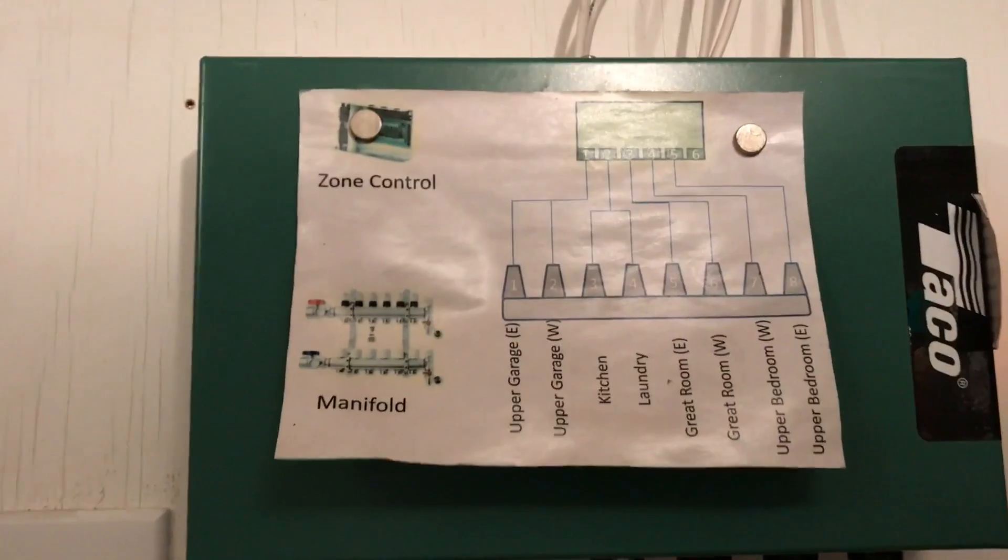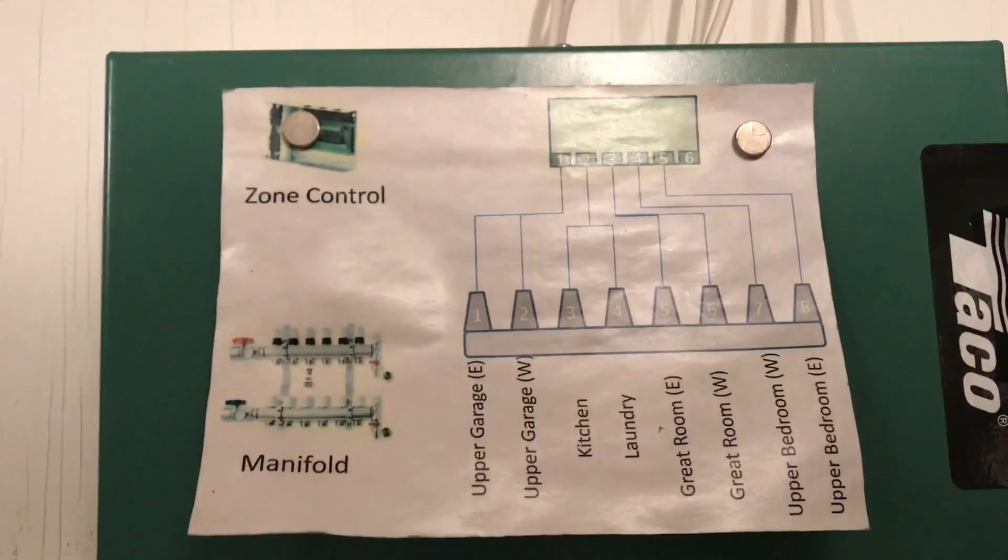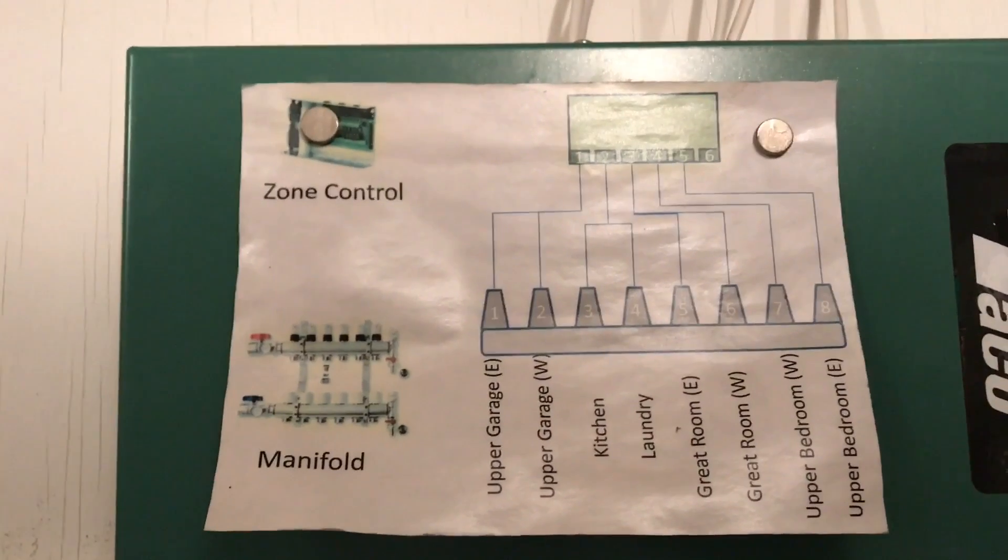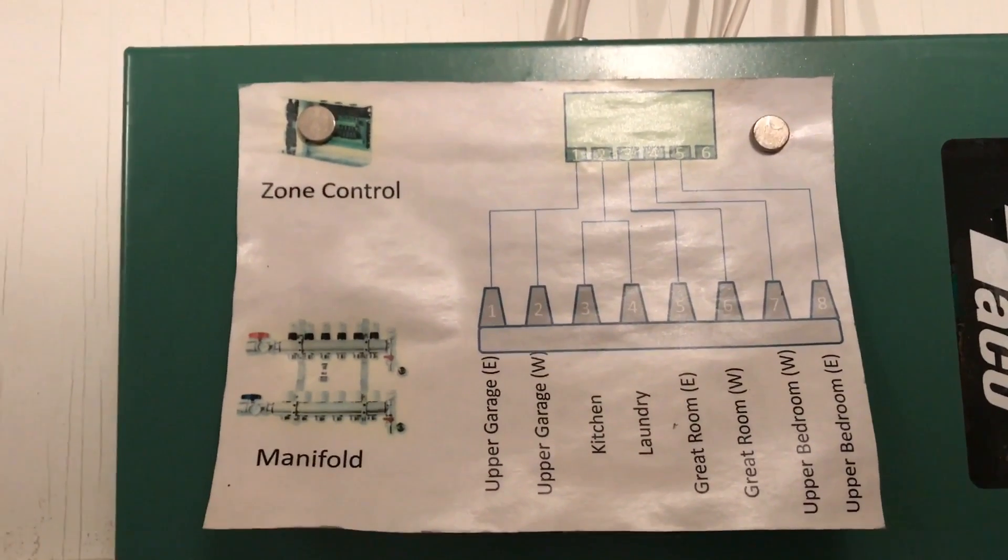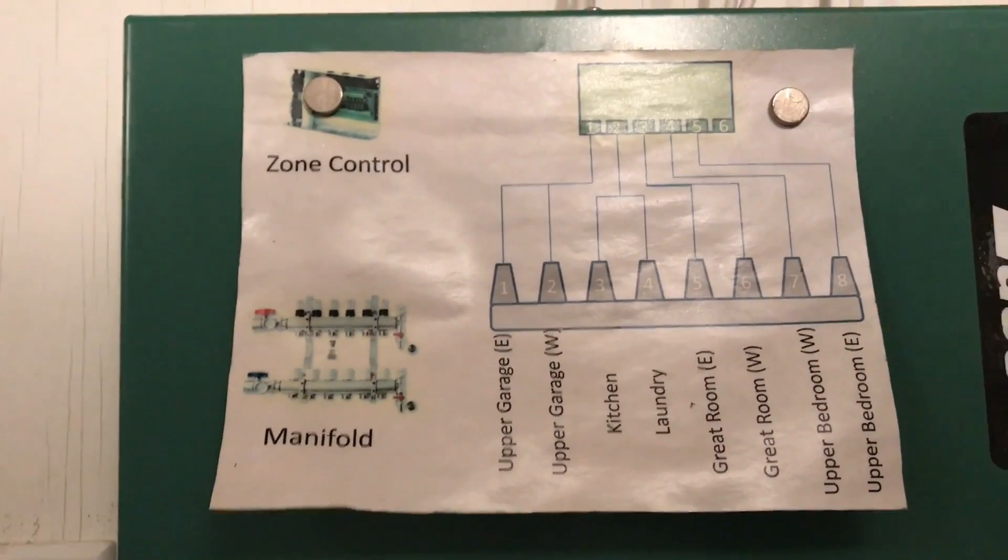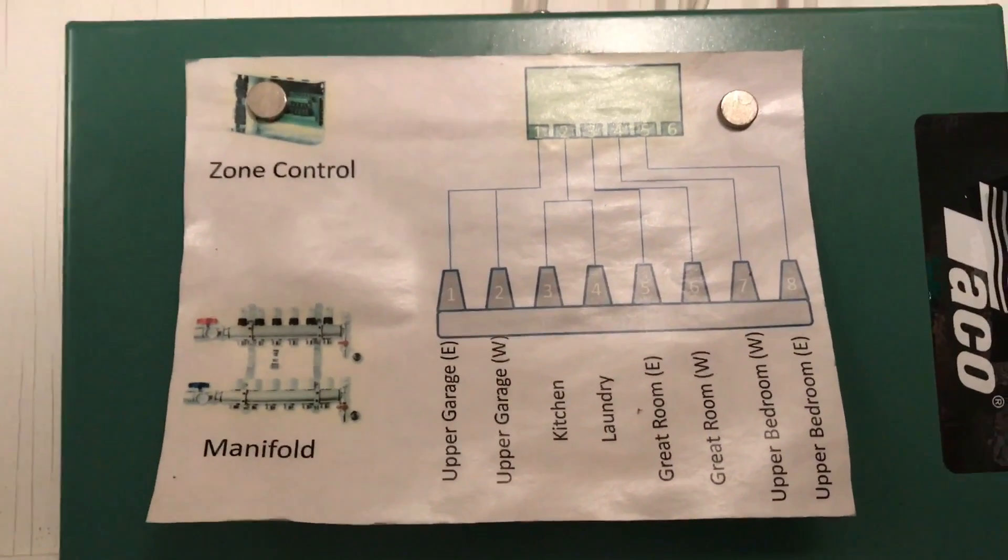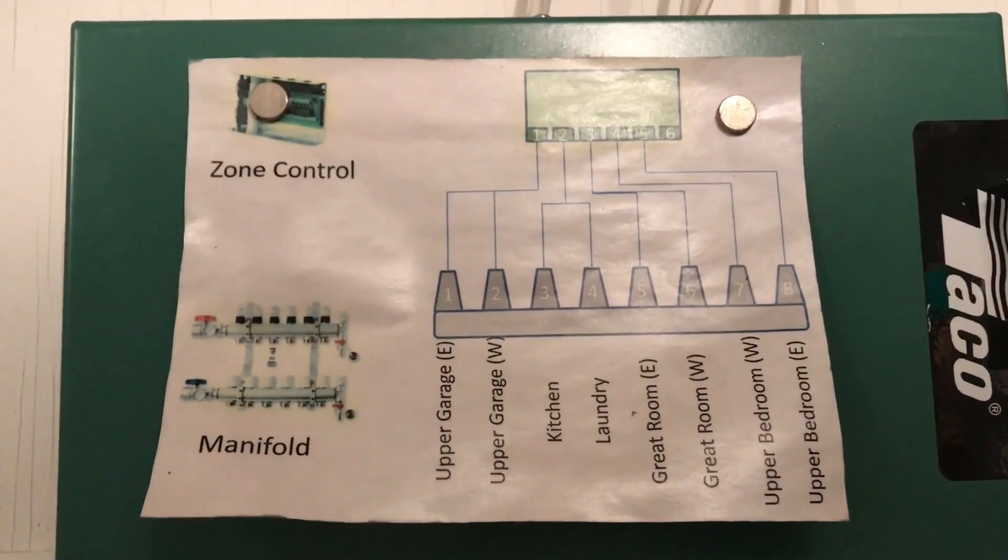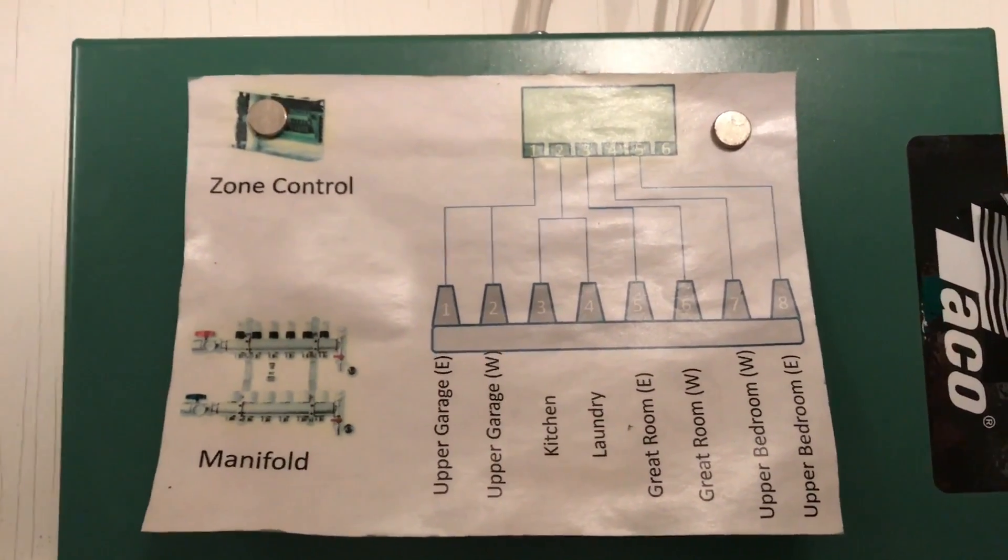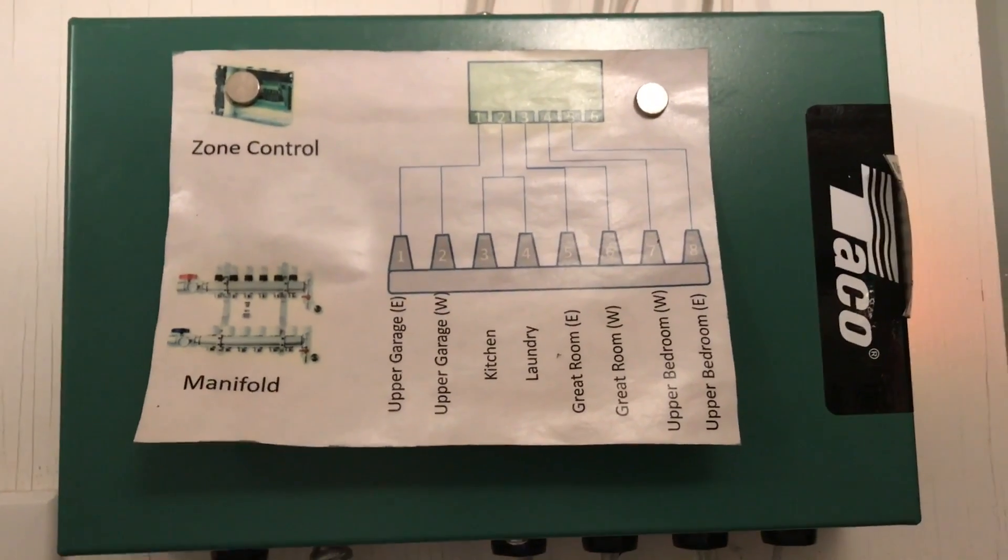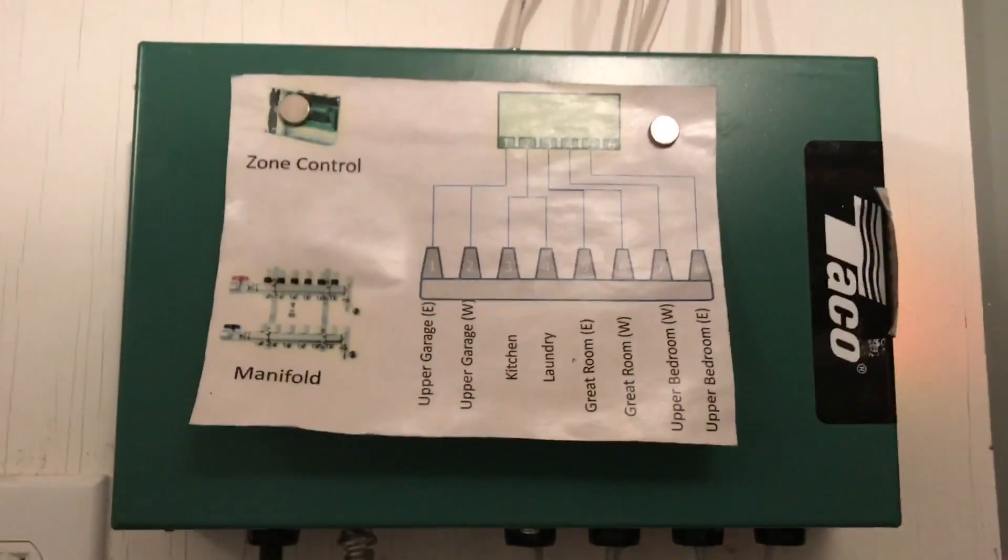So as you'll notice from my little picture, I have some heating loops that are combined together on a single thermostat. And that just has to do with the way I laid out the house or the garage. You see there, upper garage east, upper garage west. The garage was big enough to warrant two heating loops, but I only needed one thermostat for the upper garage.